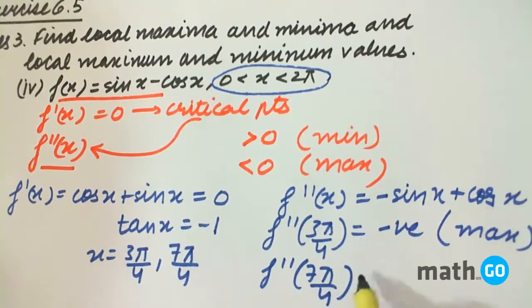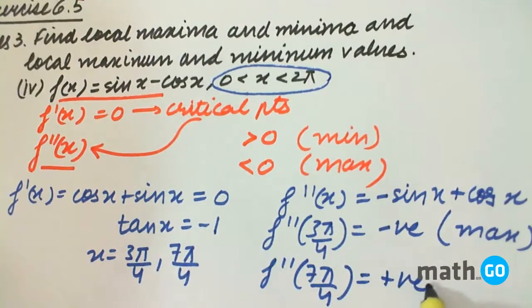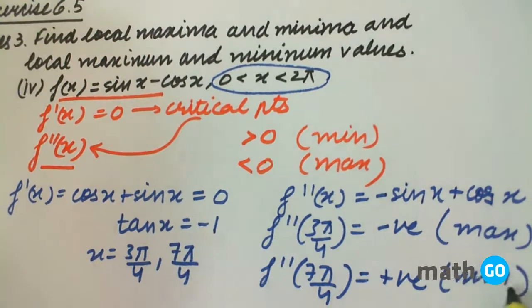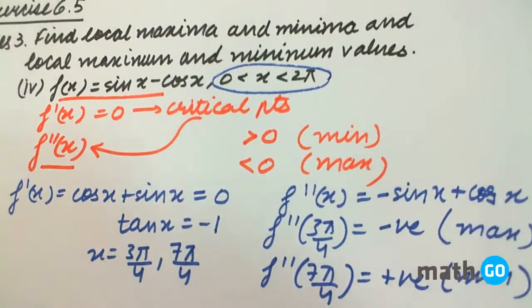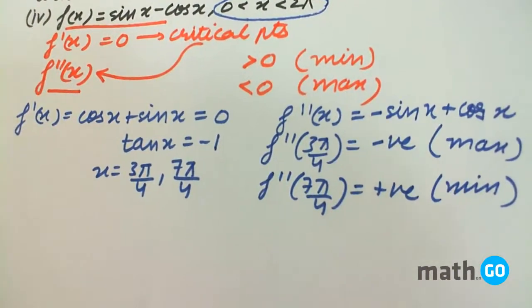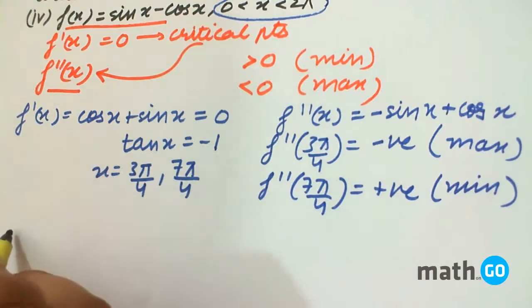And f''(7π/4) comes out to be positive, therefore it is a point of minimum. And for finding the values, the maximum and the minimum values, we simply put these critical points into the function given.